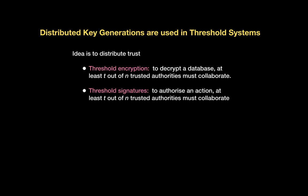Another situation where distributed key generation algorithms are used is in threshold signatures, where we want to authorize an action. For example, we might want a key storing lots of crypto funds. We maybe don't want to trust that secret key with just one party because that party might steal all the money, but we're okay to trust a group of 10 people. We still want it to be the case that if we can't communicate with everybody who holds shares, we can still participate — this is why t may be less than n.